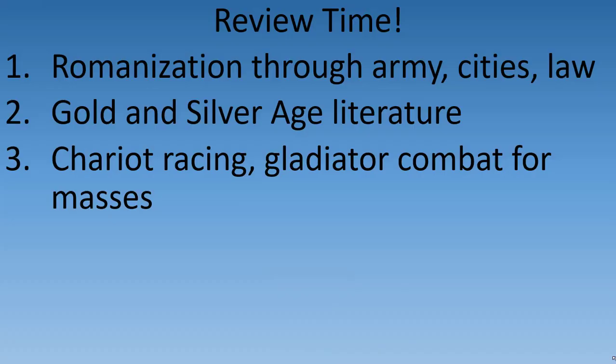Let's take a break and review the main points of this section. First, the process of Romanization was carried out through the army, cities, and the law. Second, Latin literature experienced a golden age under Virgil and Ovid and a silver age in the following century with writers like Seneca. Third, the masses enjoyed spectacles like chariot racing and especially gladiator shows, which would often pit two different types of gladiators against each other, but also consist of prisoner executions and animal fights.